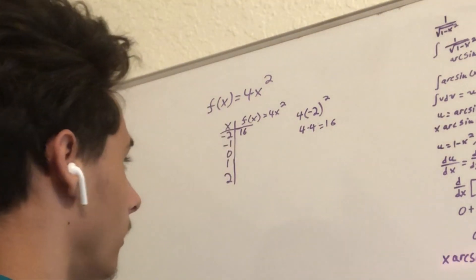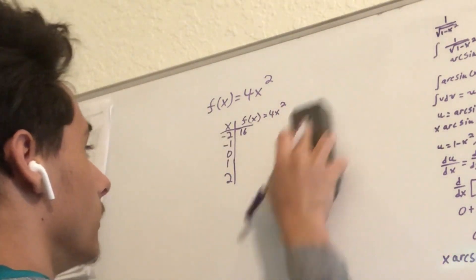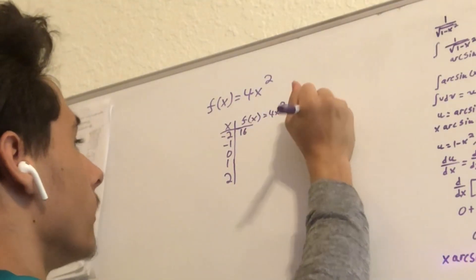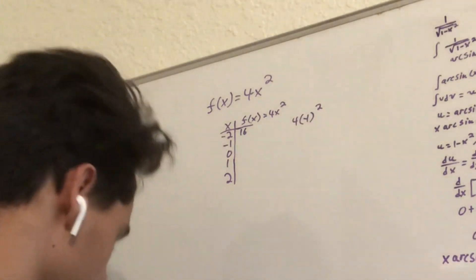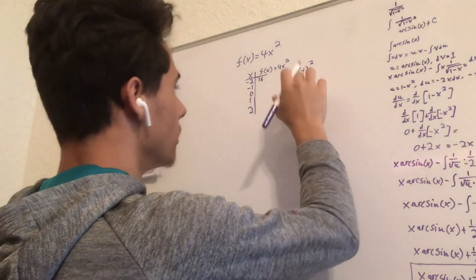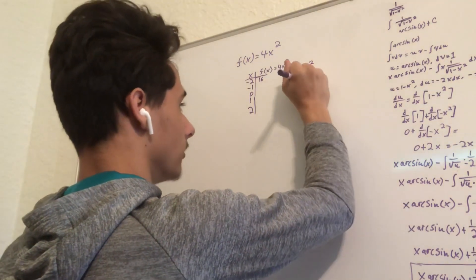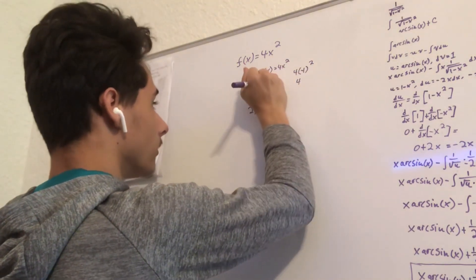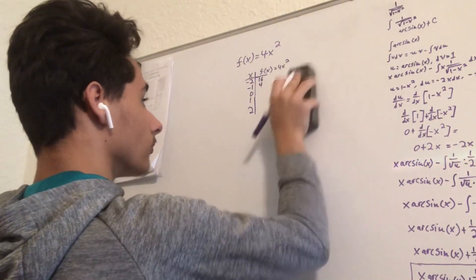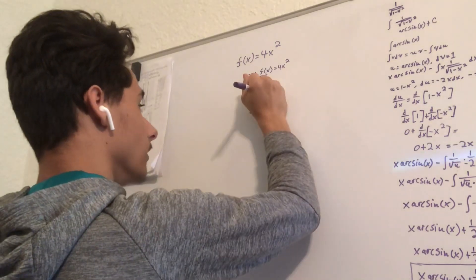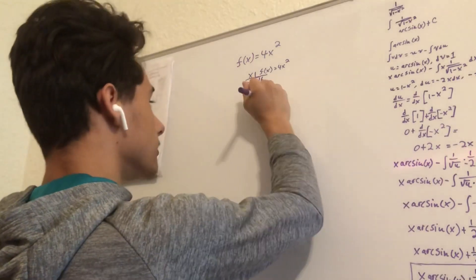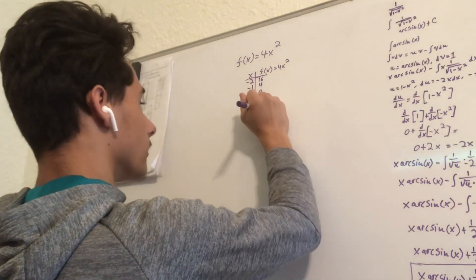Now we can plug in negative one for x, so it's gonna be four times negative one squared. Negative one to the second power is positive one, so it's gonna be four. And then zero — because anything times zero is zero — and then the positive values are just gonna be the same.